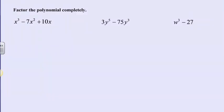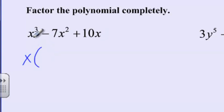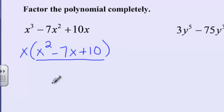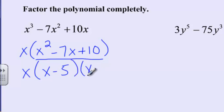Our first expression is x cubed minus 7x squared plus 10x. I see that there's an x in each term, so I'm going to factor that out. Taking x out of x cubed leaves x squared, out of negative 7x squared leaves negative 7x, and out of 10x leaves 10. Now I factor x squared minus 7x plus 10 — I need two numbers that multiply to 10 and add to negative 7, which gives x minus 5 and x minus 2. So the fully factored answer is x times (x minus 5) times (x minus 2).